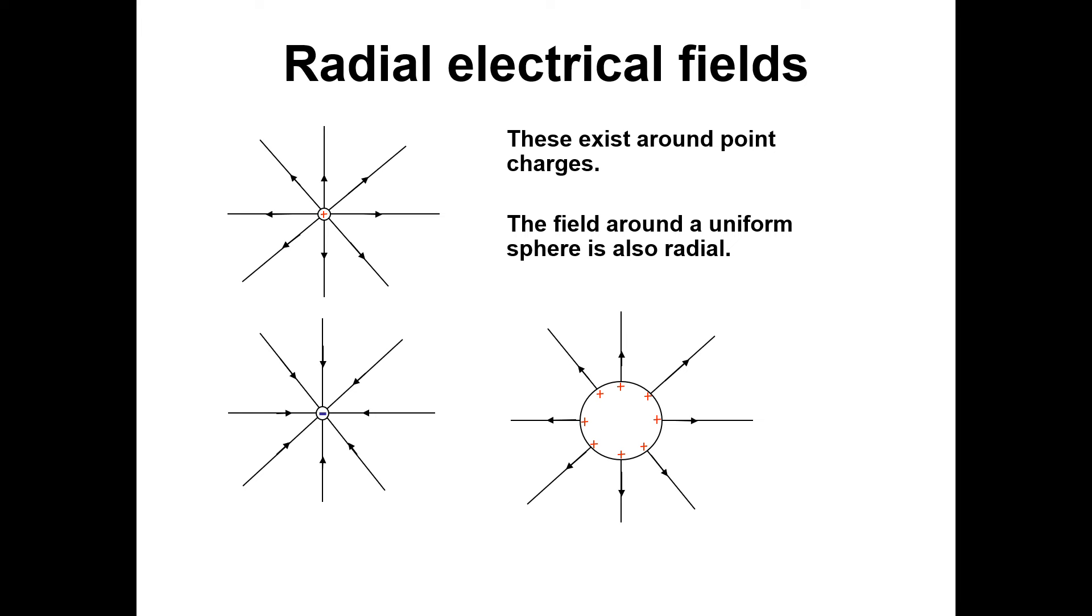We're talking about radial fields again, similar to what we did with gravitation. They exist around point charges, and the field around a uniform sphere is also radial, so essentially we consider everything to be a point charge. But there's two different types of charge, positive and negative. When there's a positive charge, the field lines extend outwards, and the field lines go into a negative charge. Again, because of that convention earlier, because a positive charge will be attracted towards the negative charge.